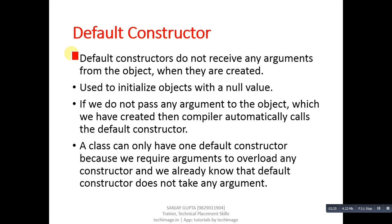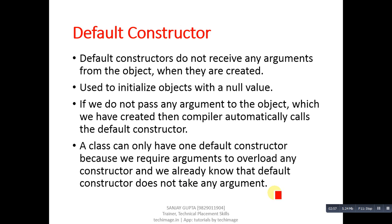Default constructor does not receive any arguments from the object when it is created. It is used to initialize an object with a null value. If we do not pass any argument to the object we have created, then the compiler automatically calls the default constructor. A class can only have one default constructor, because we require arguments to overload any constructor and the default constructor does not take any argument. So overloading of the default constructor is not possible, and in a class we can define only one default constructor.